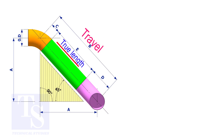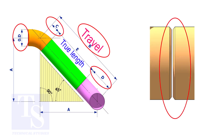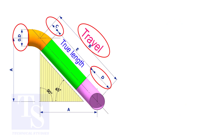To calculate the true length or the cut length, we need to know the travel length, the diameter of the pipe, the joint gap, and the elbow center. The elbow center is sometimes called the takeoff length.